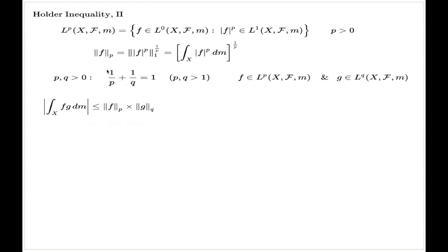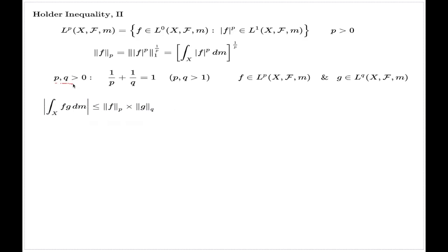So p=1 and q=infinity will be the version of the Hölder inequality we proved earlier. This is just an informal consideration which includes that inequality we proved earlier into this general scheme. You cannot use the proof I'm going to present for this inequality for finite p and q to prove the inequality with infinity here and 1 here.